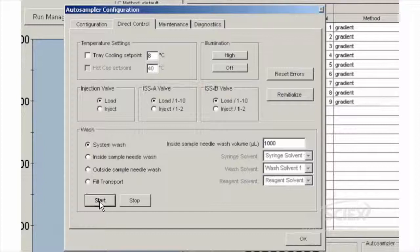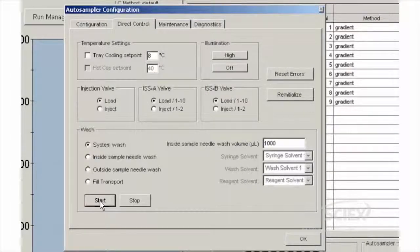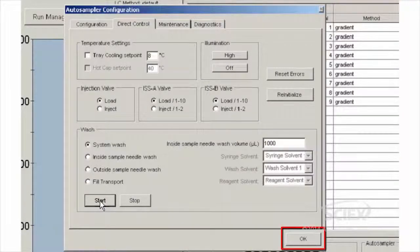Perform a system wash of 1000 microliters. After clicking start, wait until the auto sampler is idle, then click OK to close the configuration window.